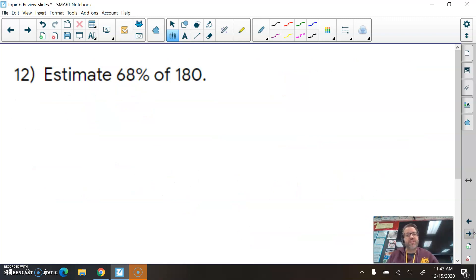Number 12, estimate 68% of 180. Now, the key with estimating is to come up with a benchmark fraction. And we also are hoping for something that will be compatible, in this case, with 180. And 68% is very close to two-thirds. Remember, two-thirds is 66 and two-thirds percent. Or you could say 66.6 repeating percent. Yeah, I mean, 68% is just a little bit larger than that. And so now, can I estimate what two-thirds of 180 is?